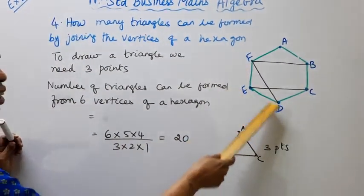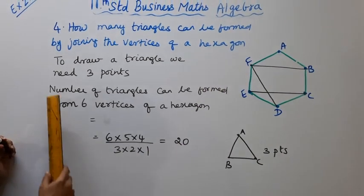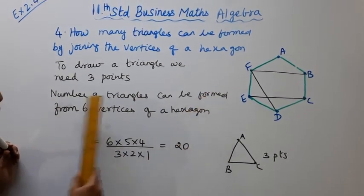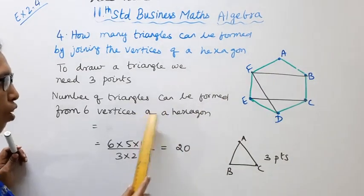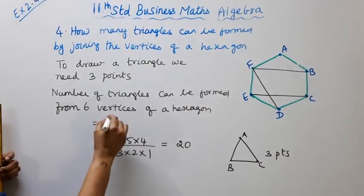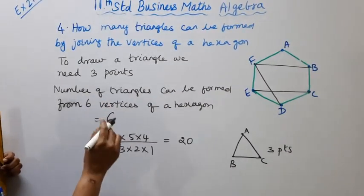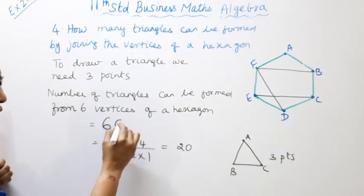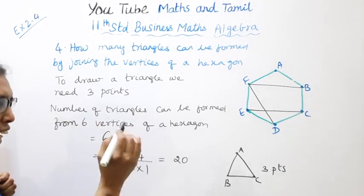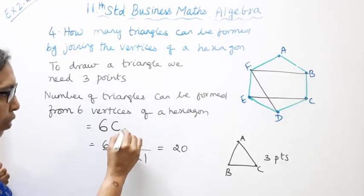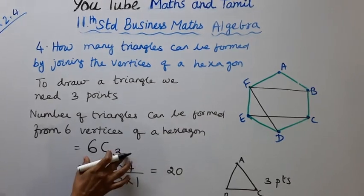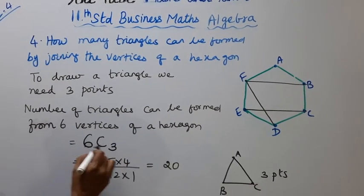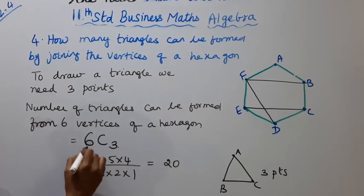Three points are needed for a triangle. Number of triangles that can be formed from 6 vertices of a hexagon using combination: 6C3.